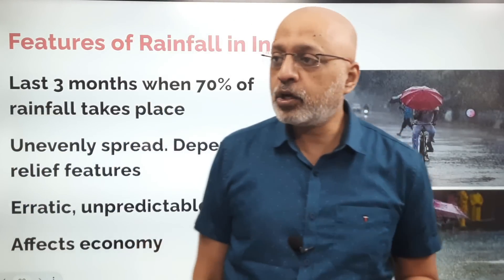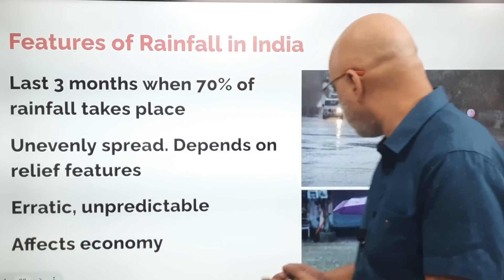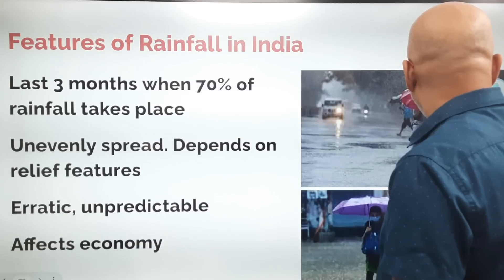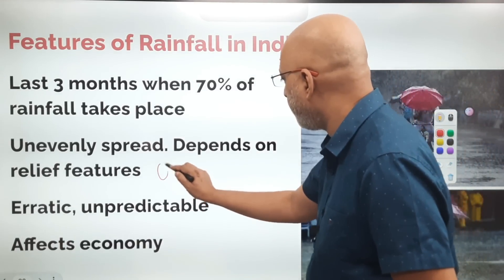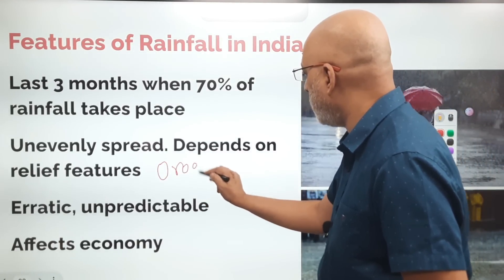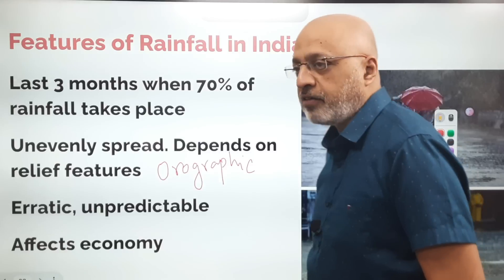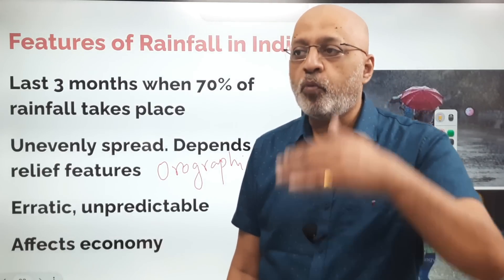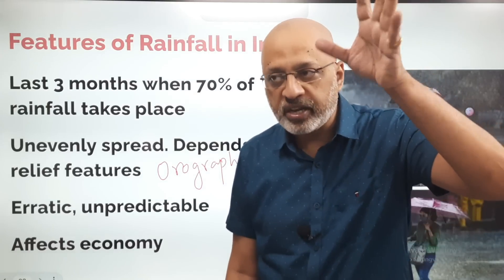There is an important factor regarding the kind of rainfall received in India — it's called orographic rainfall. Orographic rainfall is rainfall caused by the lifting of moist air over a mountain, and it occurs in mountainous areas like the Western Ghats. This can explain questions like why the Thar is a desert.